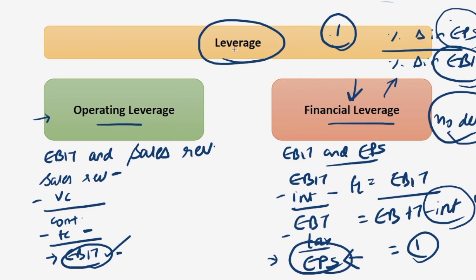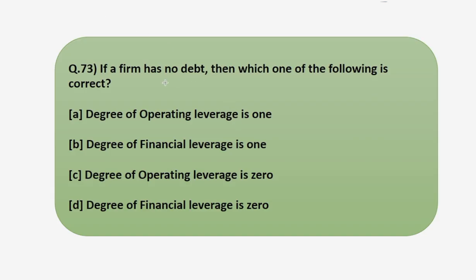If you look at it through a different formula, percentage change in EPS upon percentage change in EBIT, if there is no debt then EPS and EBIT will increase or decrease in direct proportion and therefore the financial leverage will be one. Moving back to the question, the role of debt comes in financial leverage, not in operating leverage. So looking at options B and D about financial leverage, the answer is that degree of financial leverage will be one. The answer is option B.